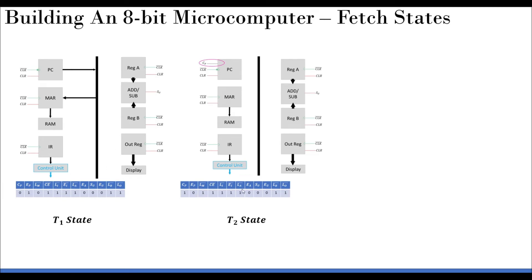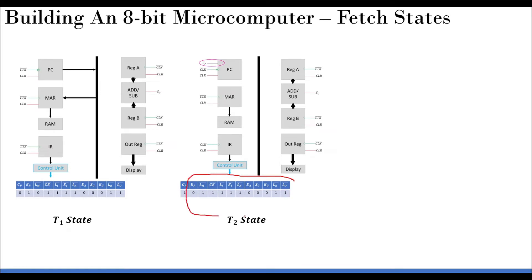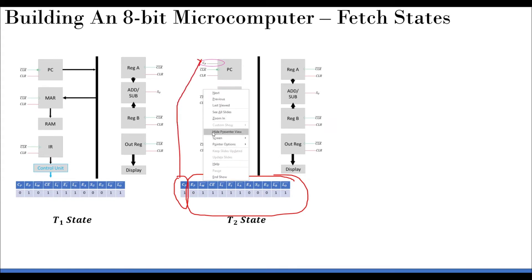For T2 state, there are no connections to the bus. The only thing happening is the incrementation of the program counter, so CP is 1. EP is 0, LM-bar is 1, CE-bar is 1, LI-bar is 1, EI-bar is 1, LA-bar is 1. EA is positive logic so it is 0. SU doesn't matter, EU is 0, LB-bar is 1, LO-bar is 1 — all these have no effect.